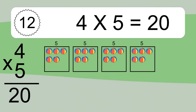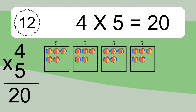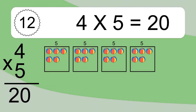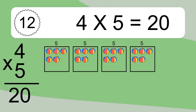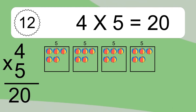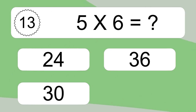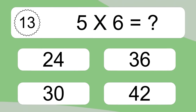4 times 5 equals what? We have 4 boxes and each box has 5 colorful balls inside. If you count all the balls in all the boxes together, you will have 4 times 5 balls. This equals 20 balls.